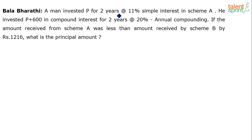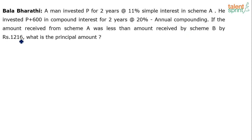A man invested P for 2 years at 11% simple interest in Scheme A. He invested P plus 600 in compound interest for 2 years at 20% annual compounding. If the amount received from Scheme A was less than the amount received from Scheme B by Rs. 12.16, what is the principal amount?